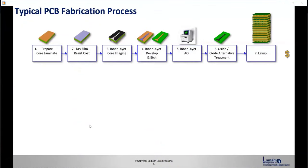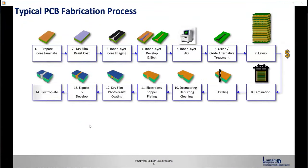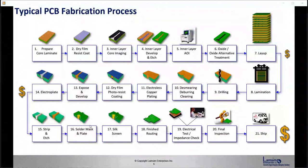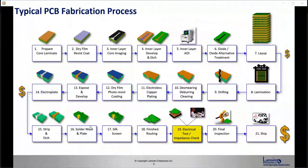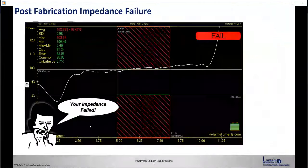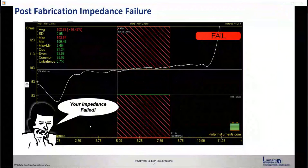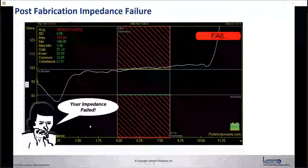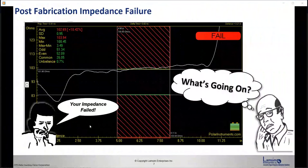The typical PCB fabrication process is quite a complicated affair, and every step along the way the cost increases. So by the time you reach step 19 — electrical tested impedance checking — you'll want to make sure that your design is correct. Otherwise, you'll get a call from your fabricator saying your impedance failed. What do you want us to do about it?